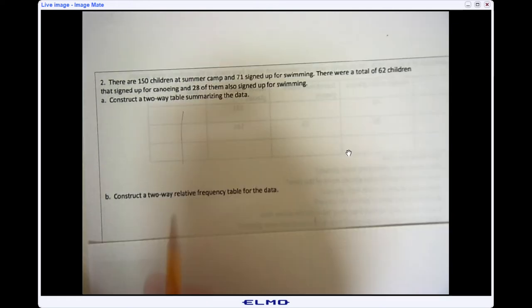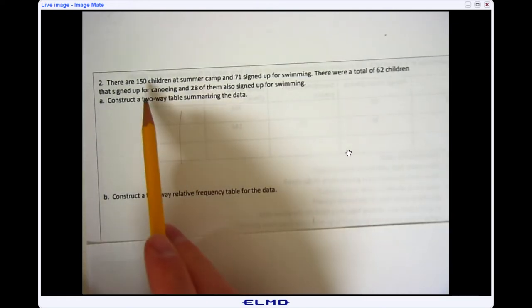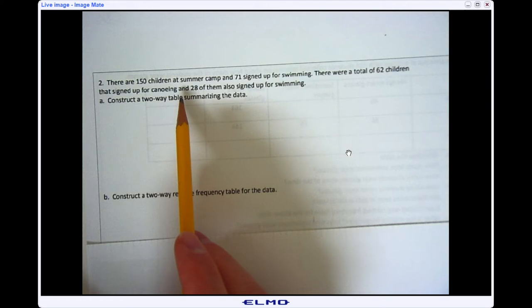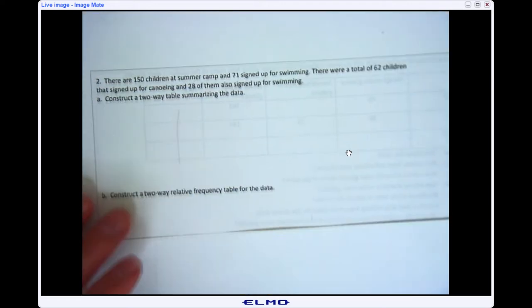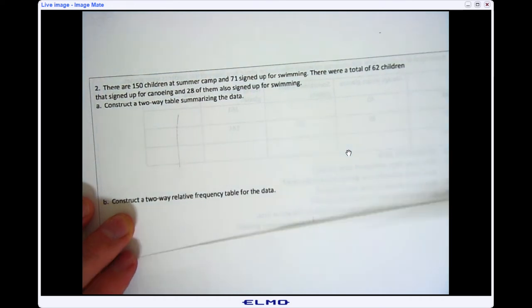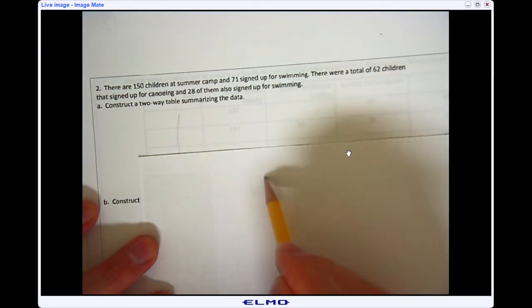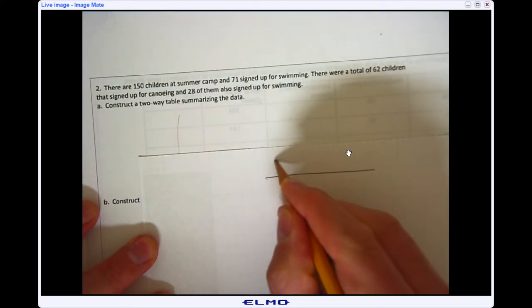So when I read this question, I'm talking about there's 150 children at a summer camp that signed up for swimming and also canoeing. So when I set up my two-way table, I'm going to put down on the top here people who went swimming.